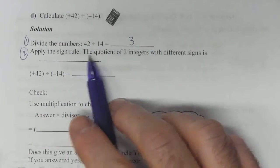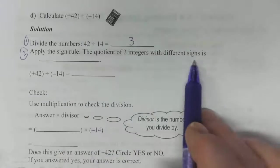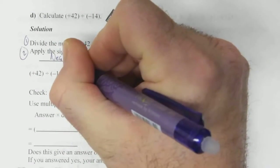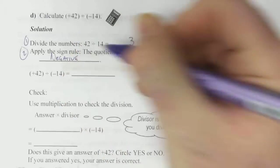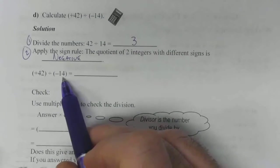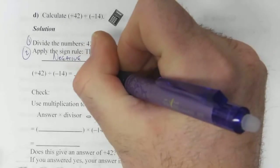Step 2, apply the sign rule. The quotient of two integers with different signs, one's positive, one's negative. They're different, so that means we know it's going to be negative. 42 divided by negative 14, it's a 3, but it's not positive 3, it's negative 3.